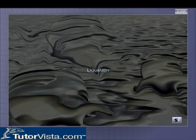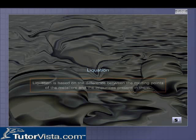Liquation is a method of purification of a metal or an ore. It is based on the difference in the melting points of the metal or ore, and the impurities present in them.